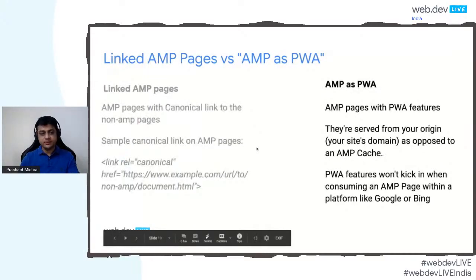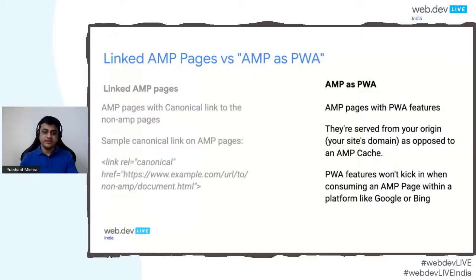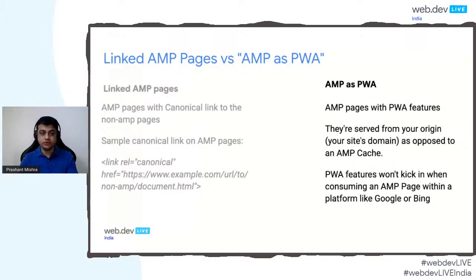How does AMP as PWA compare? We develop just a single copy of the page using AMP HTML and add PWA features on the AMP page itself. There won't be a canonical link pointing back to a parent page. One caveat is that AMP features won't kick in when users are on Google Search — features will only kick in when pages are served from the origin. That should be okay in most cases, because when the user lands on your page they will be redirected to your domain, and that is where PWA functionalities kick in, including add-to-home-screen and other features.